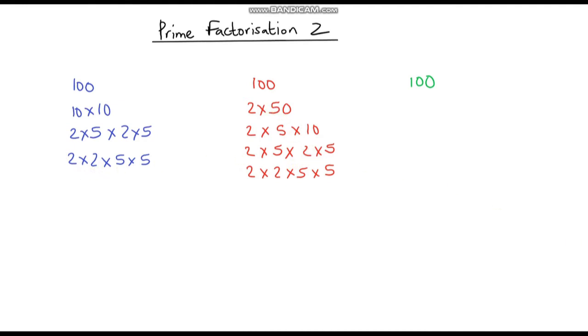Just for kicks, let's do one more way. How else can we get 100? Well, we can start off the same way, 2 times 50, but this time instead of doing 5 times 10 to get 50, I can also do 2 times 25.